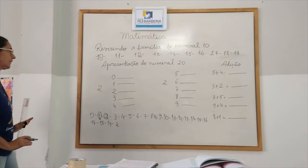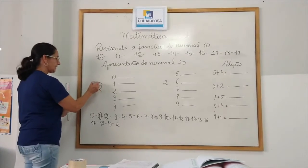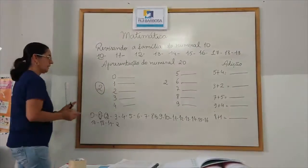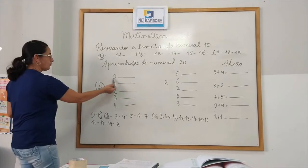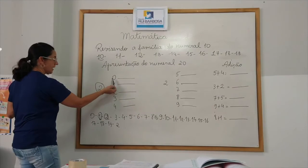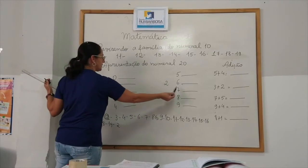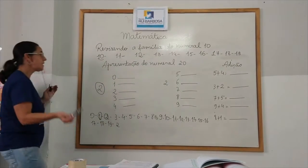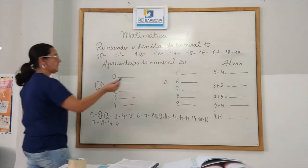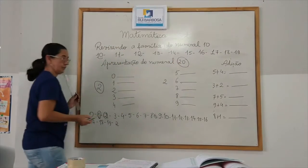O que é que vai acontecer? Eu vou pegar esse 2, que é o chefe, e vou juntar com as unidades. 0, 1, 2, 3, 4, 5, 6, 7, 8, 9. E vou formar a família do numeral 20.